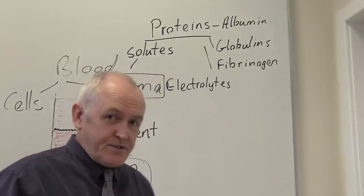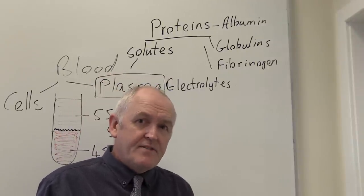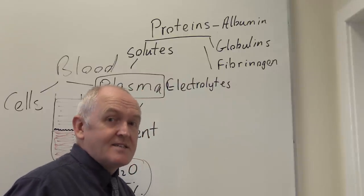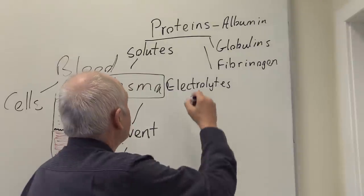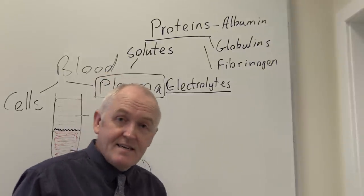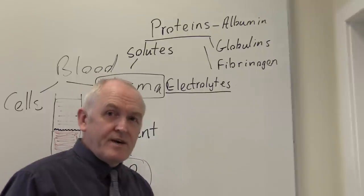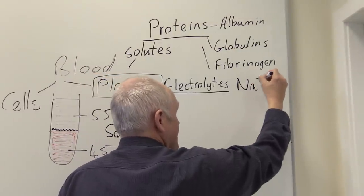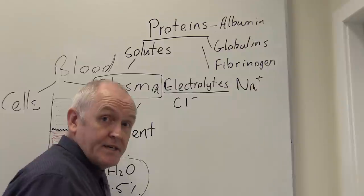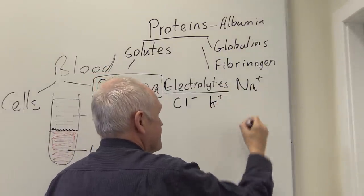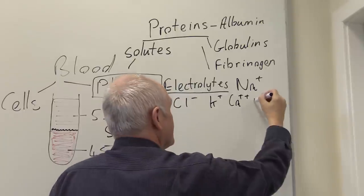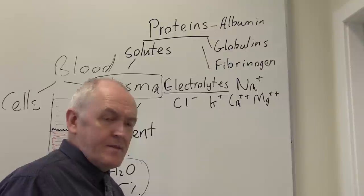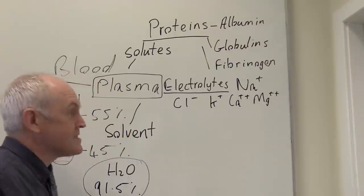The plasma also contains electrolytes. Electrolytes are ions — atoms with a charge. These are very important because we need the correct distribution of electrolytes on both sides of the cell membrane in excitable cells. The volume of electrolytes must be finely and homeostatically regulated. The common ones are sodium (Na+), chlorine (Cl-), potassium (K+), calcium (2+), and magnesium (2+).